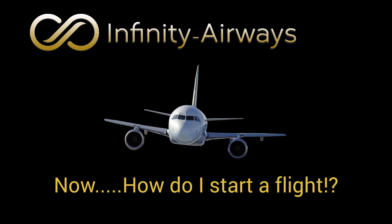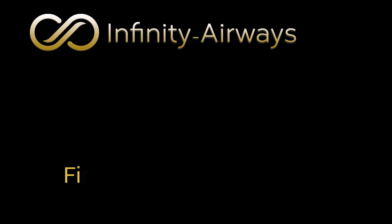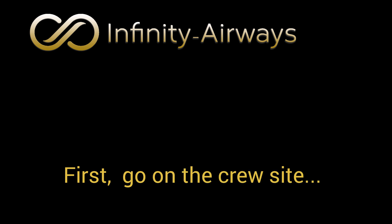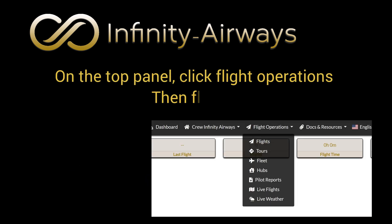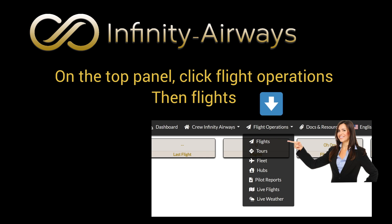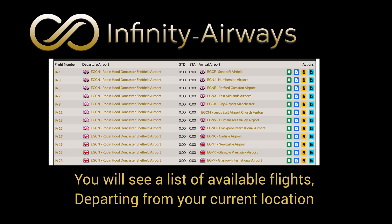Now, how do I start a flight? First, go on the crew site. On the top panel, click Flight Operations, then Flights. You'll now see a list of available flights, all departing from your current location.